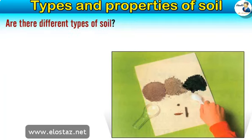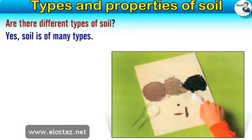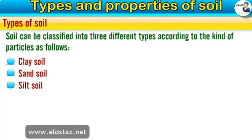Are there different types of soil? The answer is yes. Soil is of many types. Soil can be classified into three different types according to the kind of particles as follows: clay soil, sand soil, and silt soil.